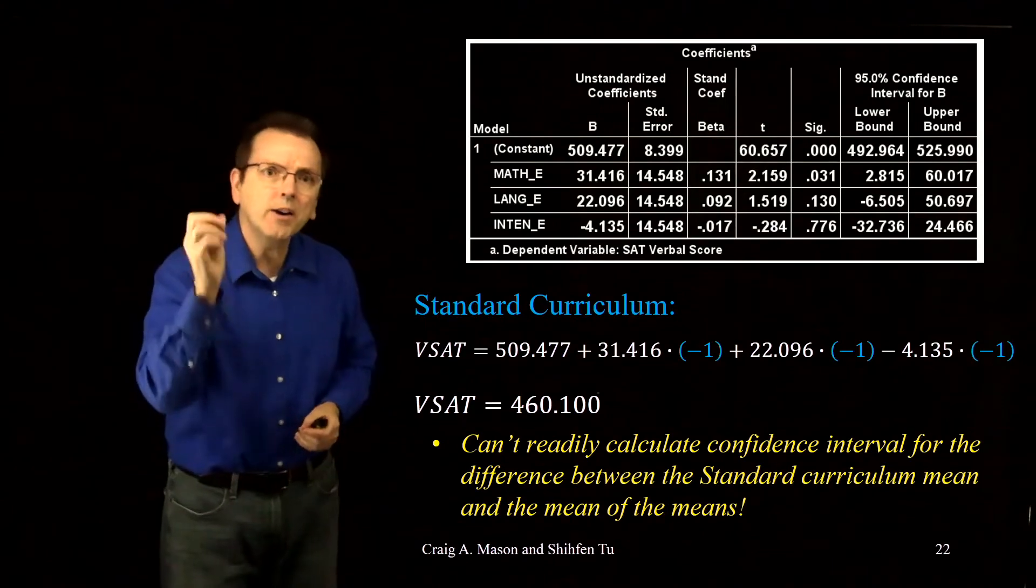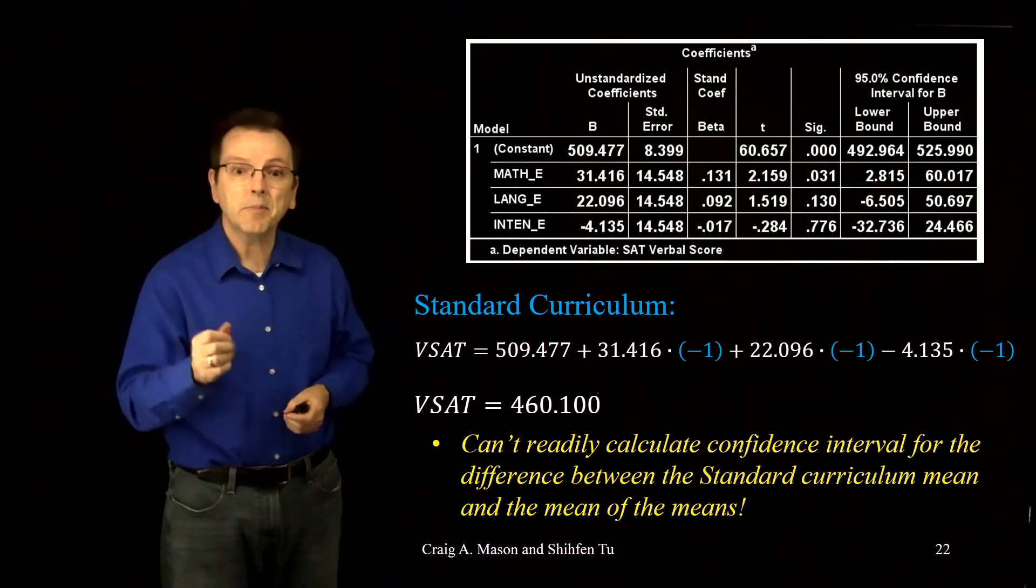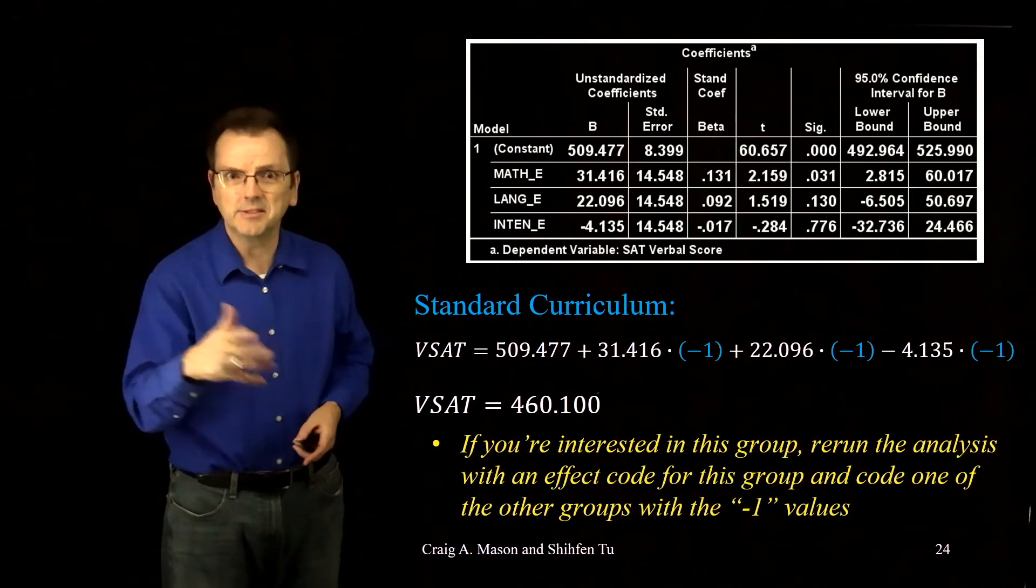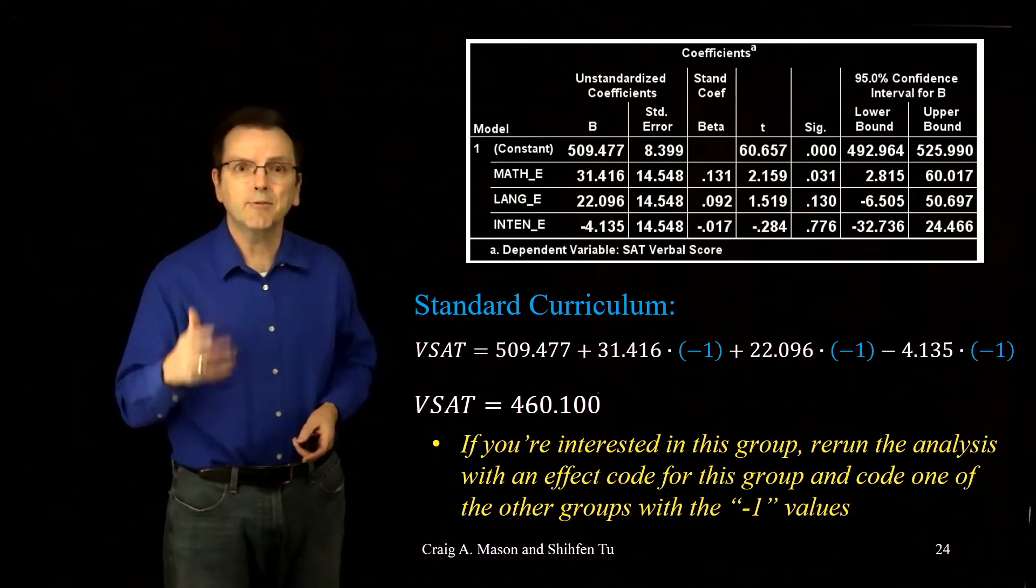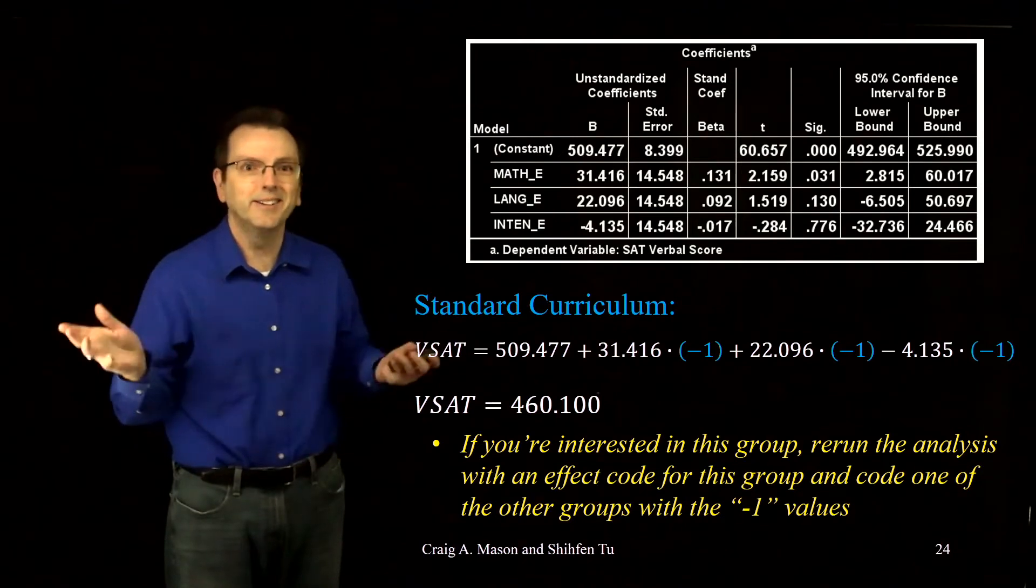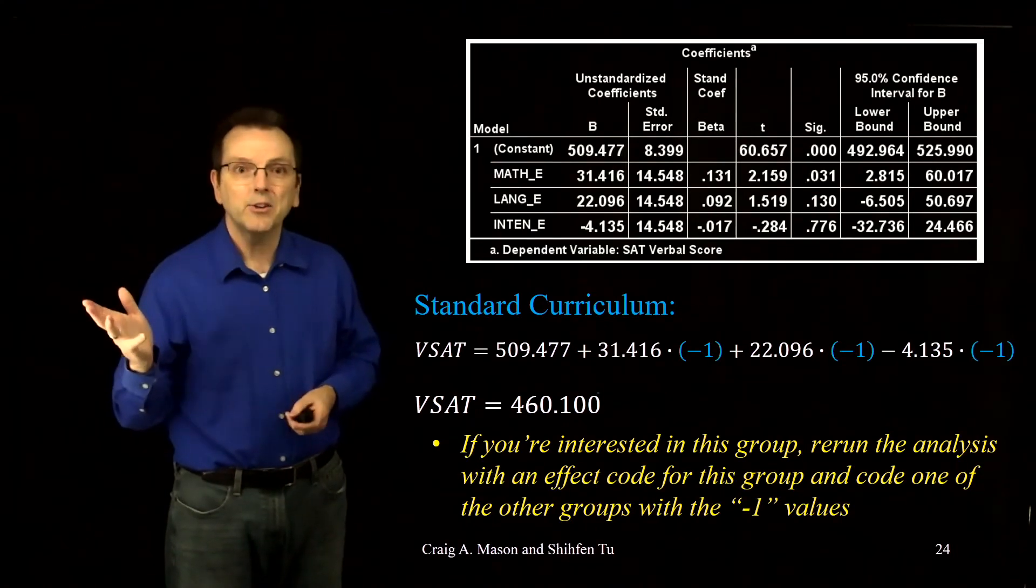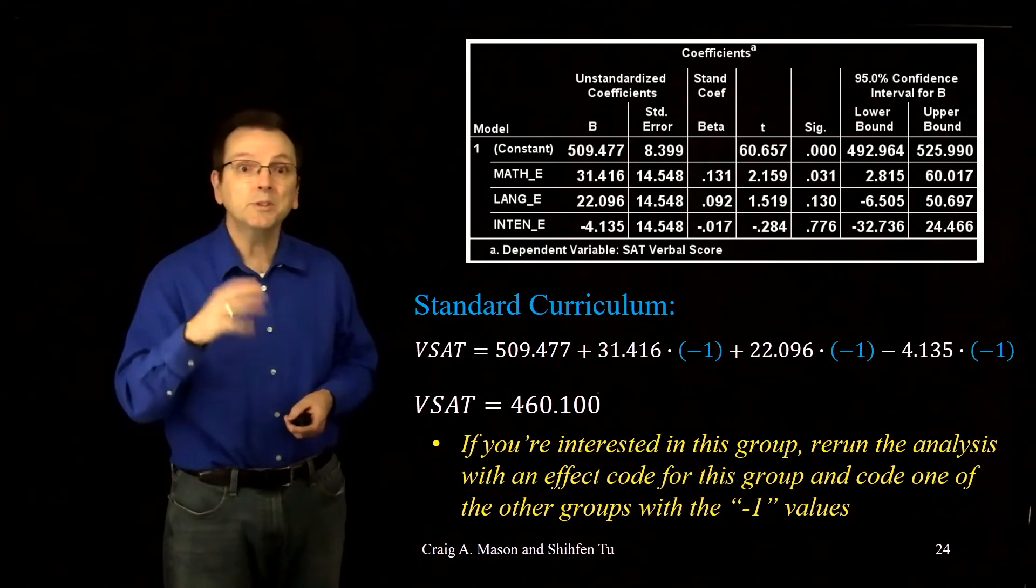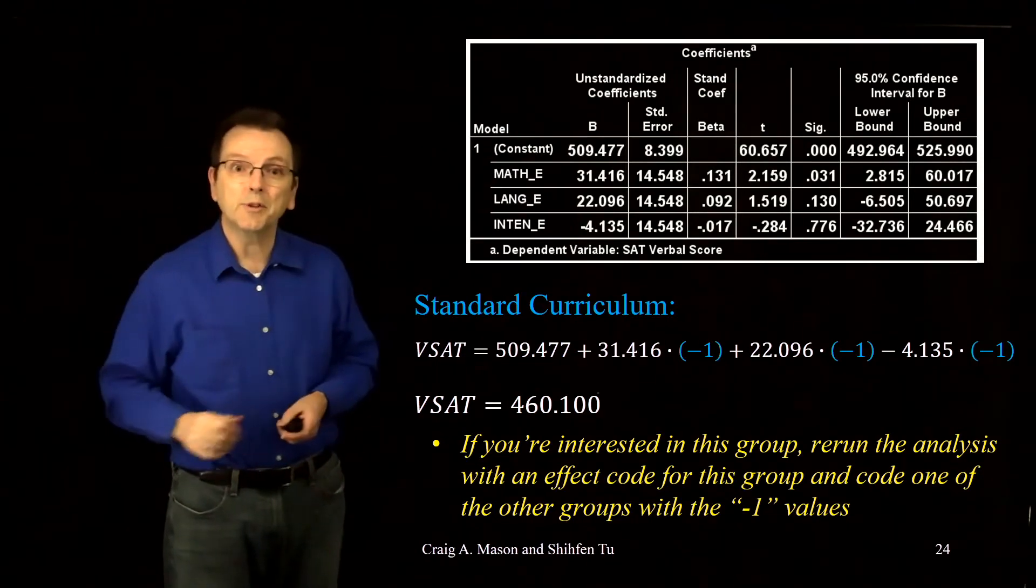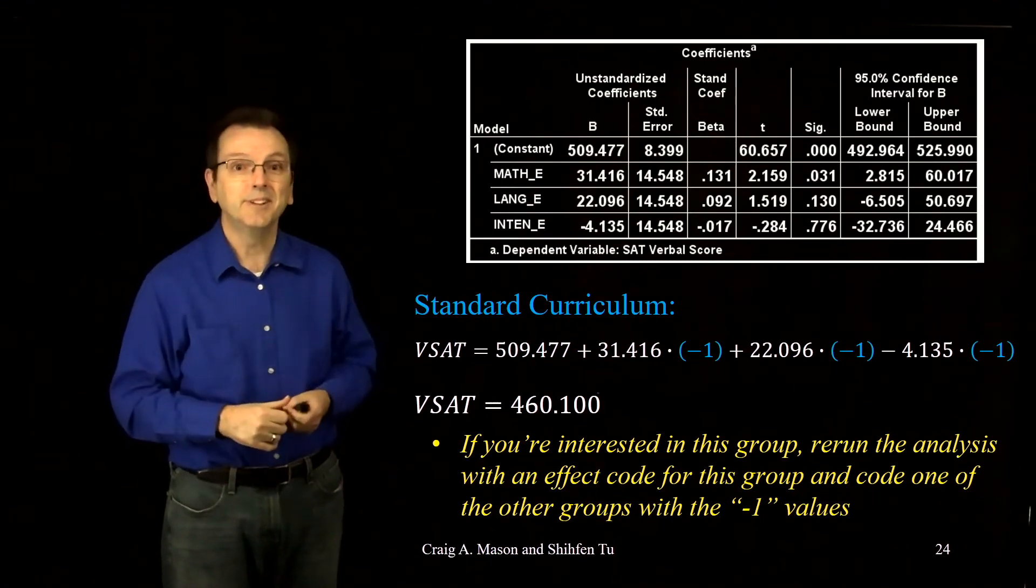So if you actually are interested in knowing whether that last group, in this case our standard curriculum, is significantly different from the mean of the means, what do you do? Well, the easiest thing given statistical software is just create a different set of effect codes. And instead of making the standard curriculum group the one coded with all minus ones, just make one of the other curriculum groups the one with all the minus one values. All you do then is rerun the analysis. Each coefficient will still compare its respective group against the mean of the means. But now one of those coefficients will be for the standard curriculum, along with the appropriate t-test and the confidence interval.